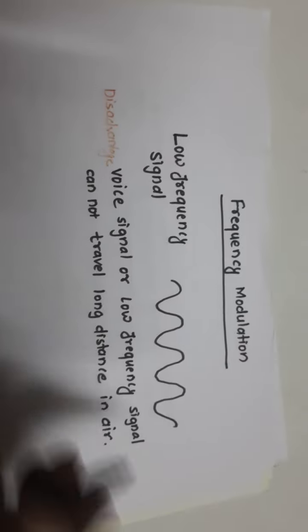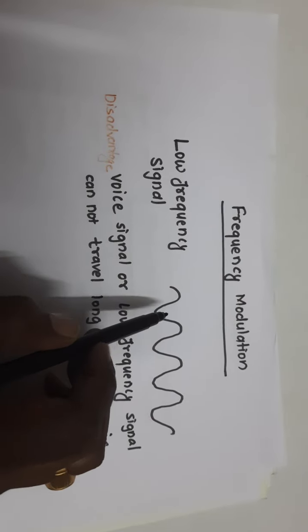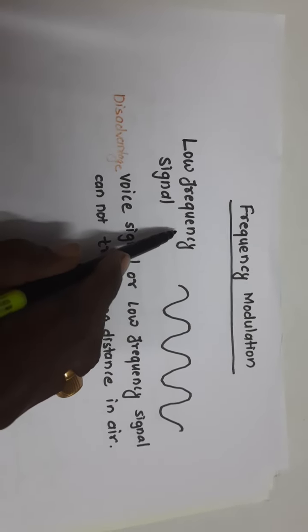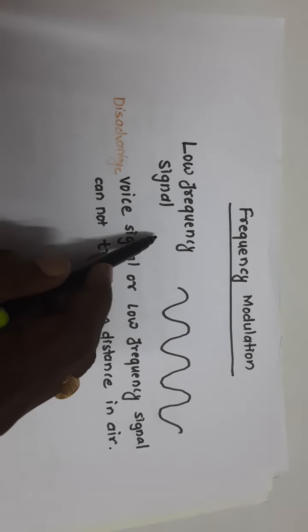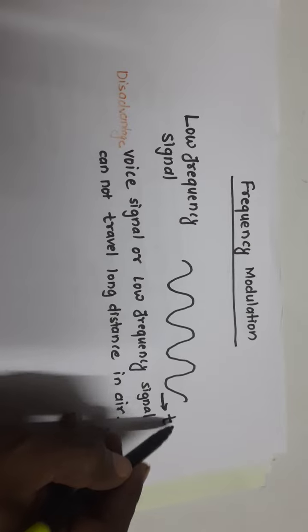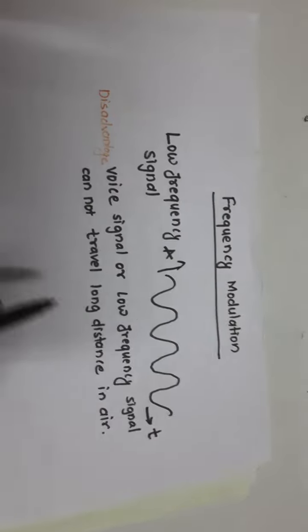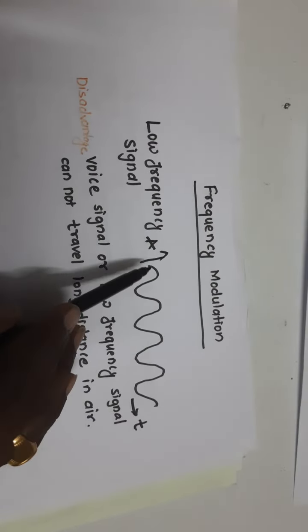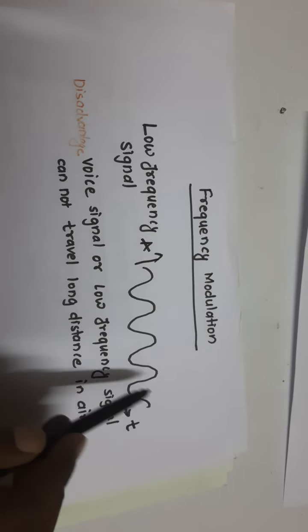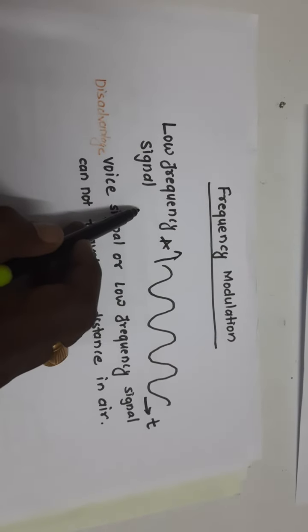While discussing about frequency modulation, first of all we must know what we mean by a low frequency signal. This is nothing but the time domain representation of a signal. On the x-axis there is always time, and on the y-axis there is always amplitude. So it is called as time domain representation, and this is a low frequency signal.